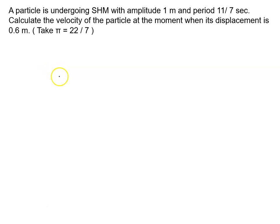A particle is undergoing SHM with amplitude 1 meter and time period 11 by 7 seconds. Calculate the velocity of the particle at the moment when displacement is 0.6 meter, and we have to consider pi as 22 by 7 in place of 3.14 here.